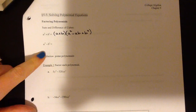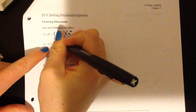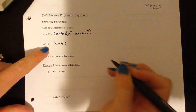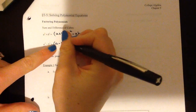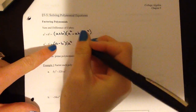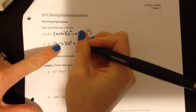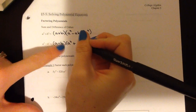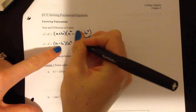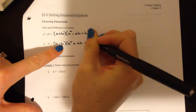And the pattern is the exact opposite for the difference of cubes. You do a minus b, then you take this first term and you square it. Then since this is subtraction, you switch to addition, multiply these two together, and then add this term squared.